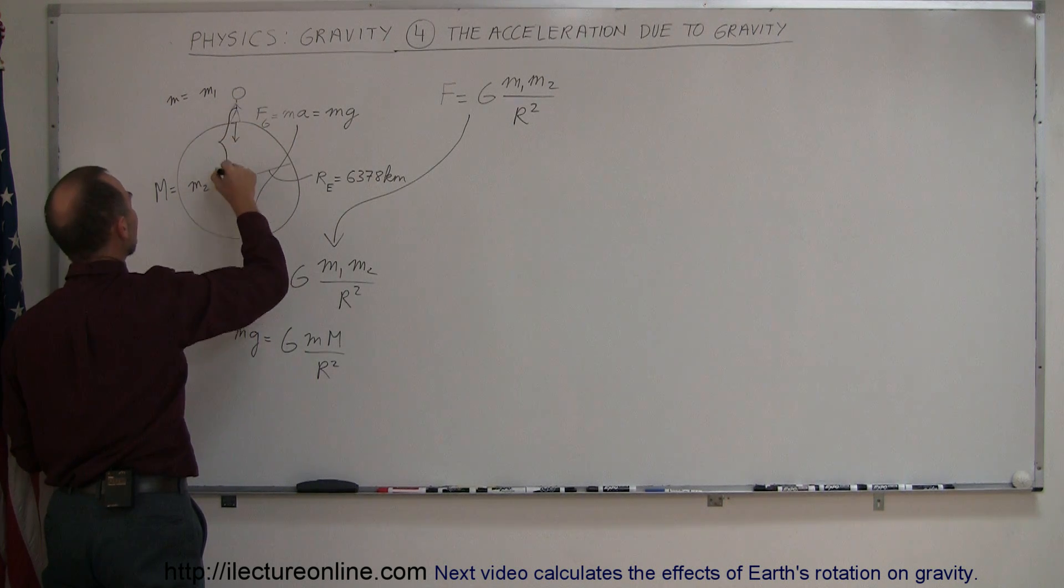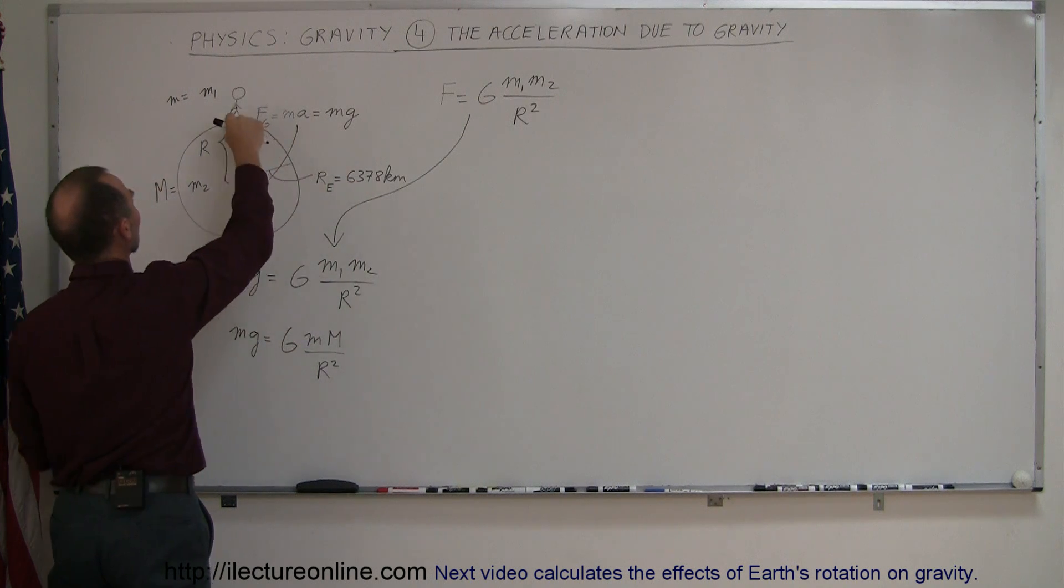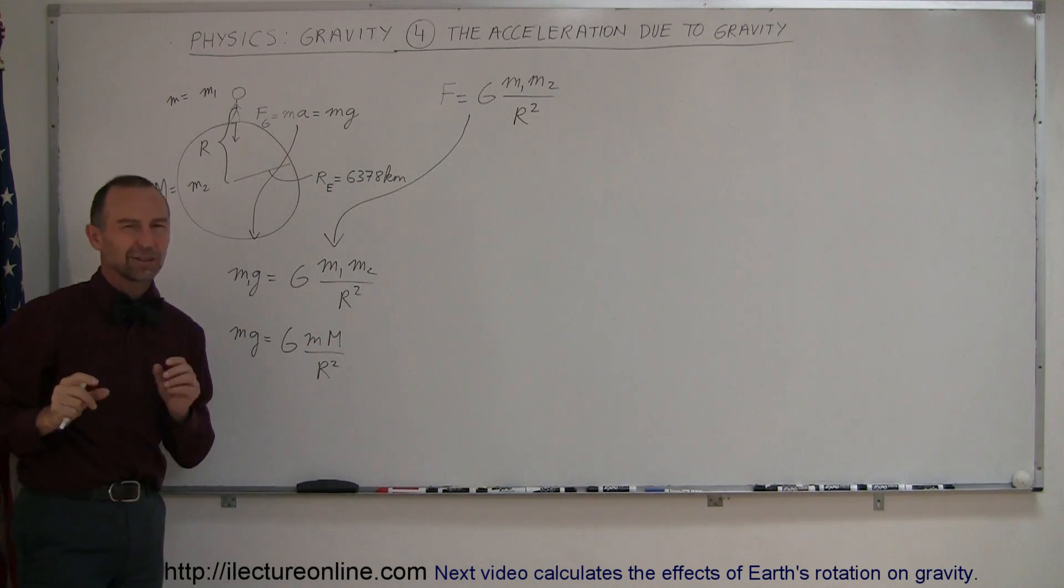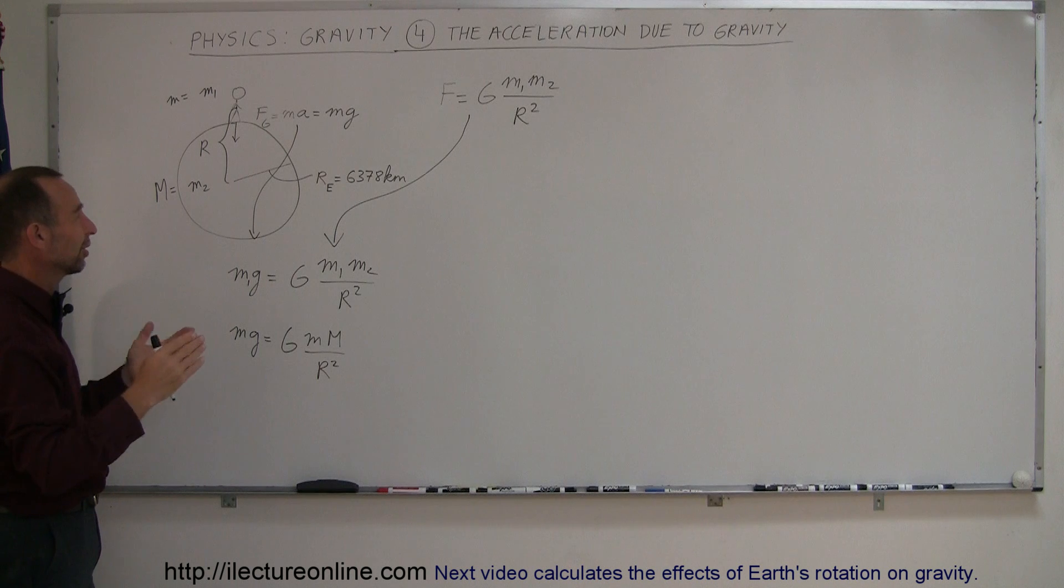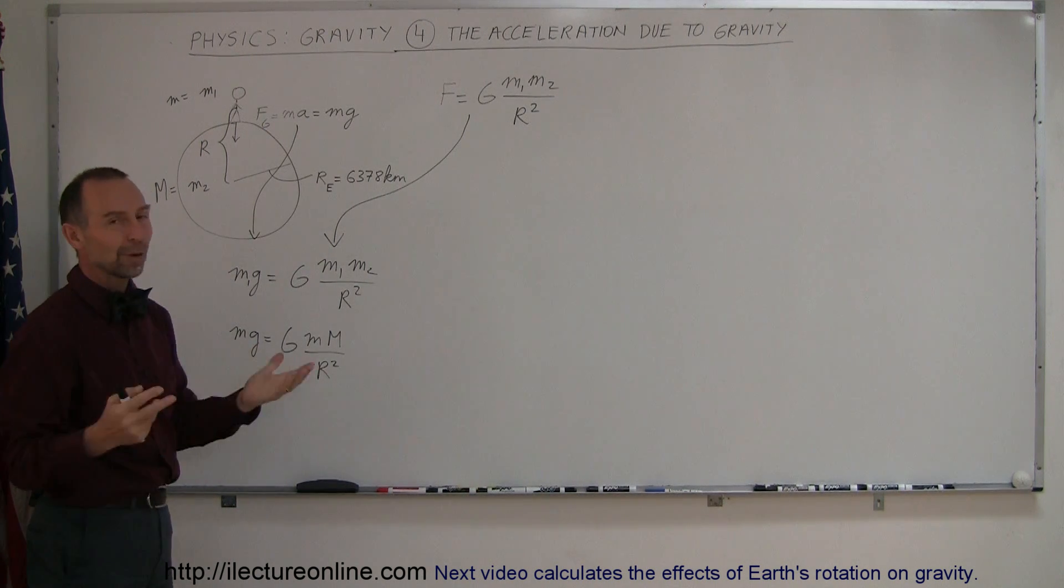So this here would be the distance r, so we'd have to add the radius of the earth to the distance on the feet to the belly button. Of course, that's such a small distance, we can just ignore it. We can simply say that the distance between them is simply the radius of the earth.